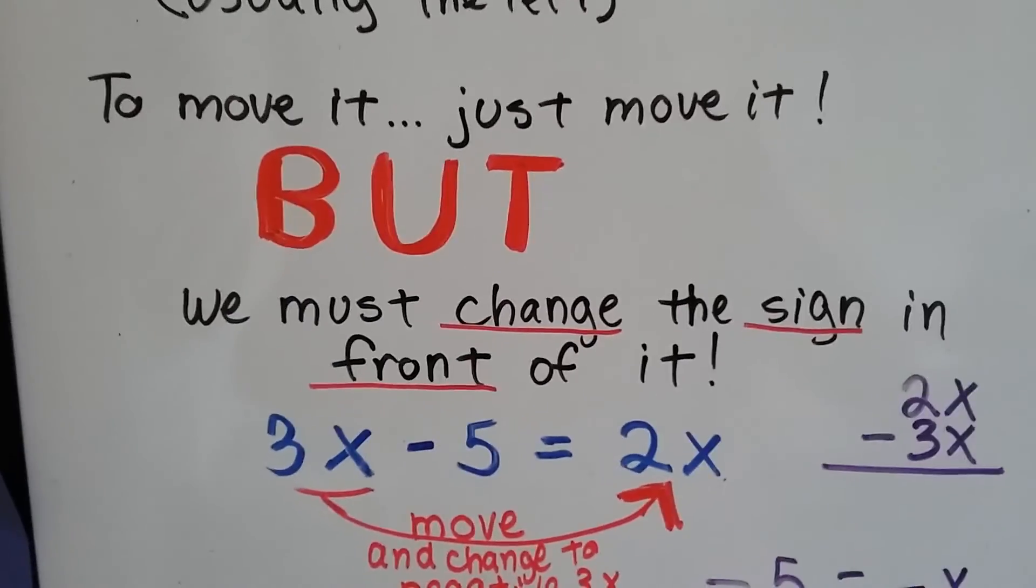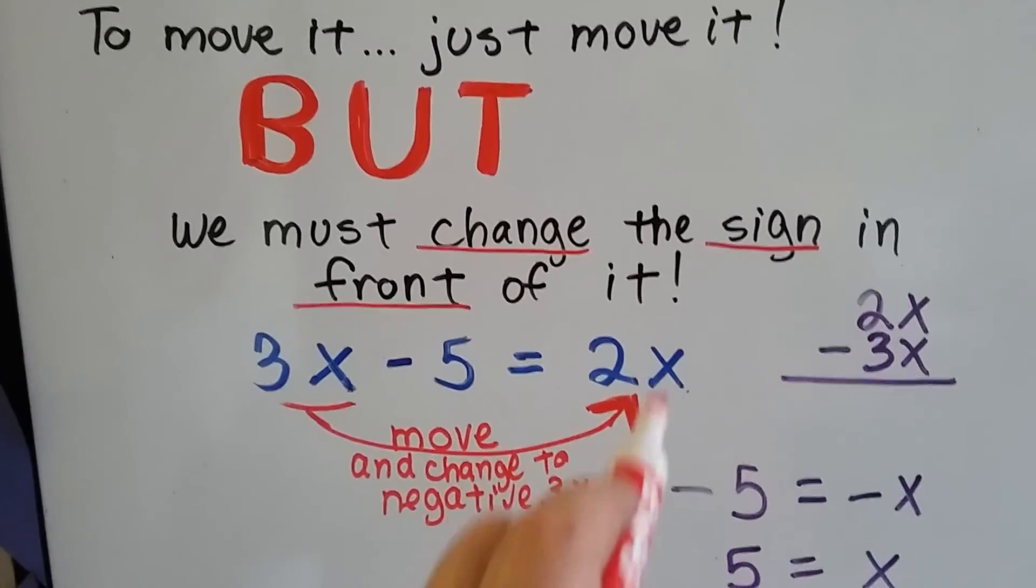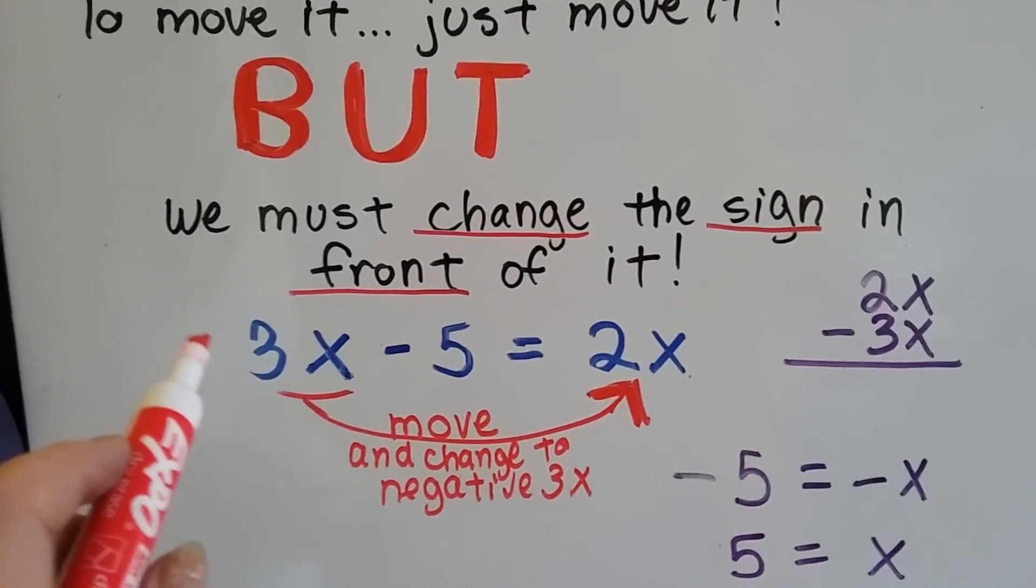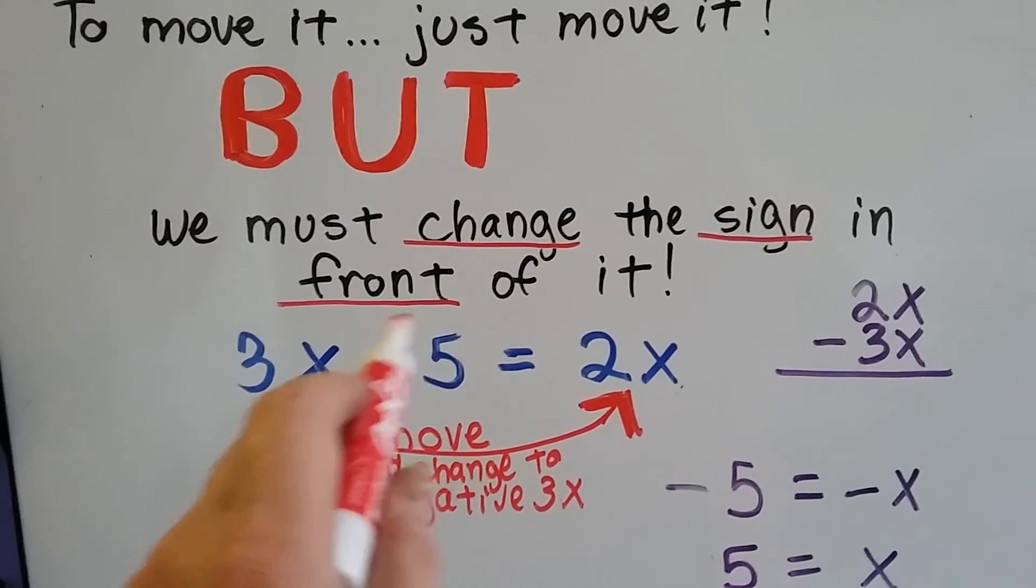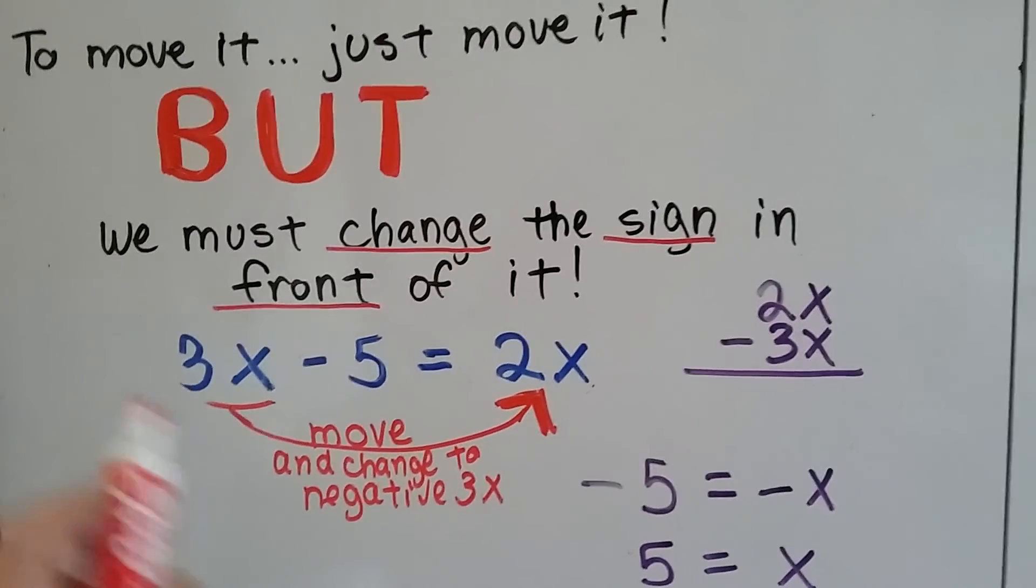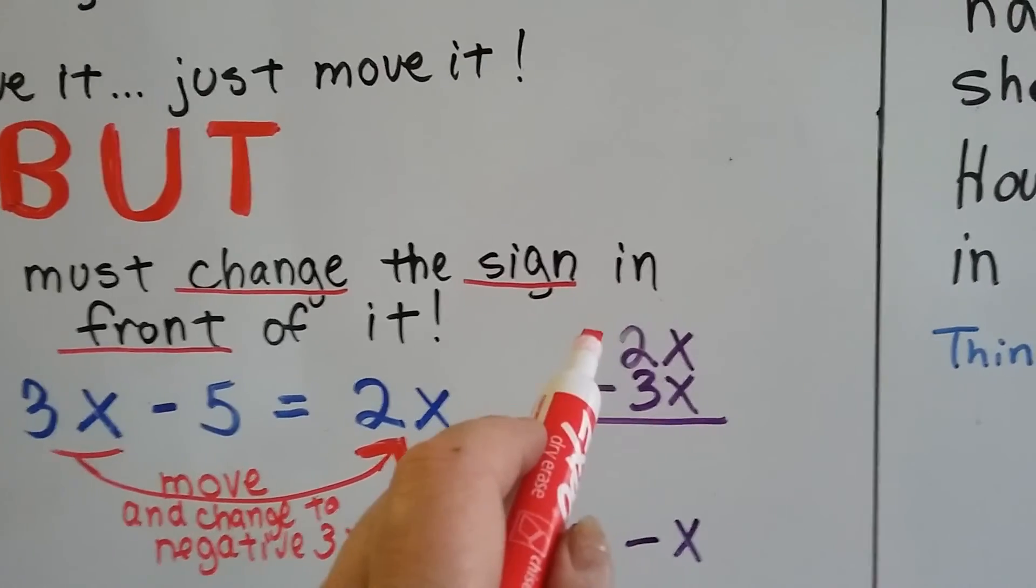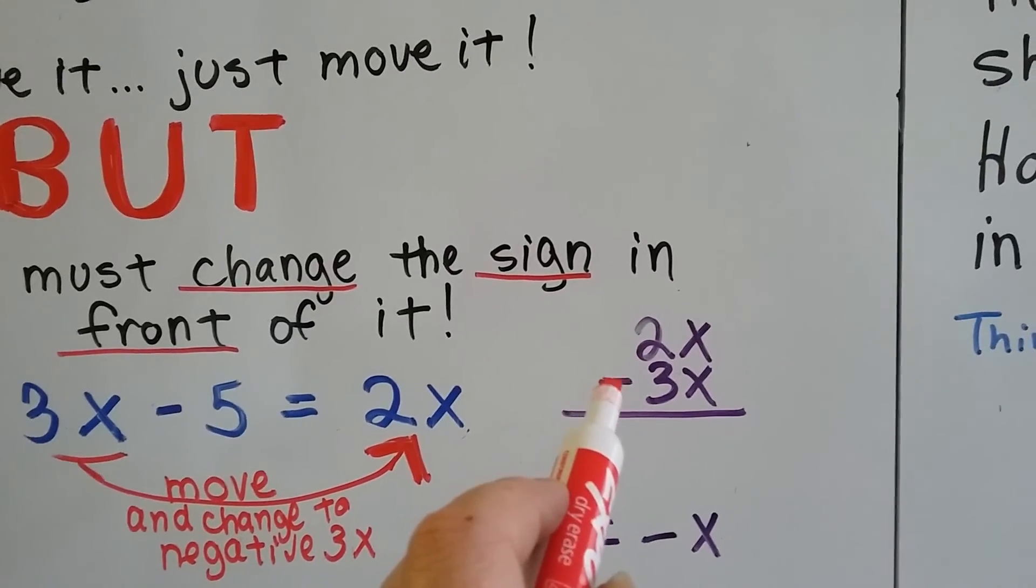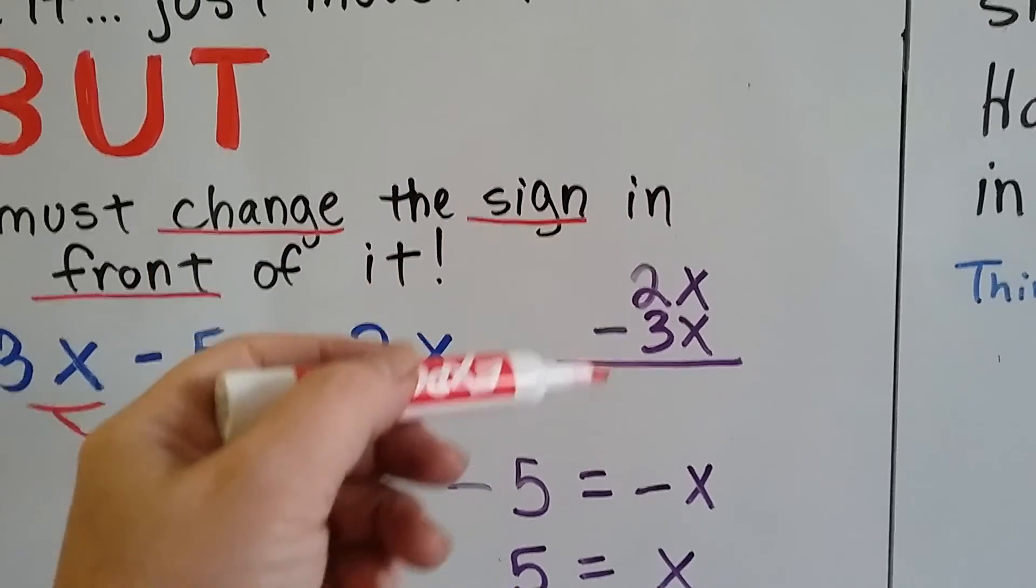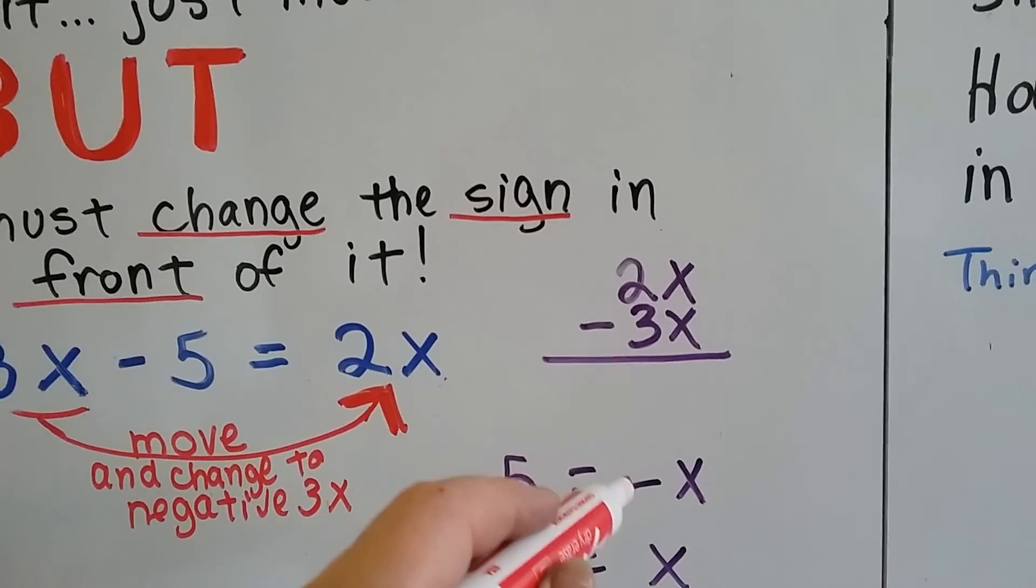So this 3x minus 5 equals 2x. We're going to move this 3x to this side, but we've got to change it to a negative 3x. It's a positive now, and then we'll get the negative 5 by itself. This will move over here, but we have to put a negative sign in front of it. Then we need to combine these like terms. If we have a positive 2x and have a negative 3x that is taken from it, it's going to put us down in the hole into the negative numbers. We're going to take away one too many for it to stay positive. So now we have a negative x.